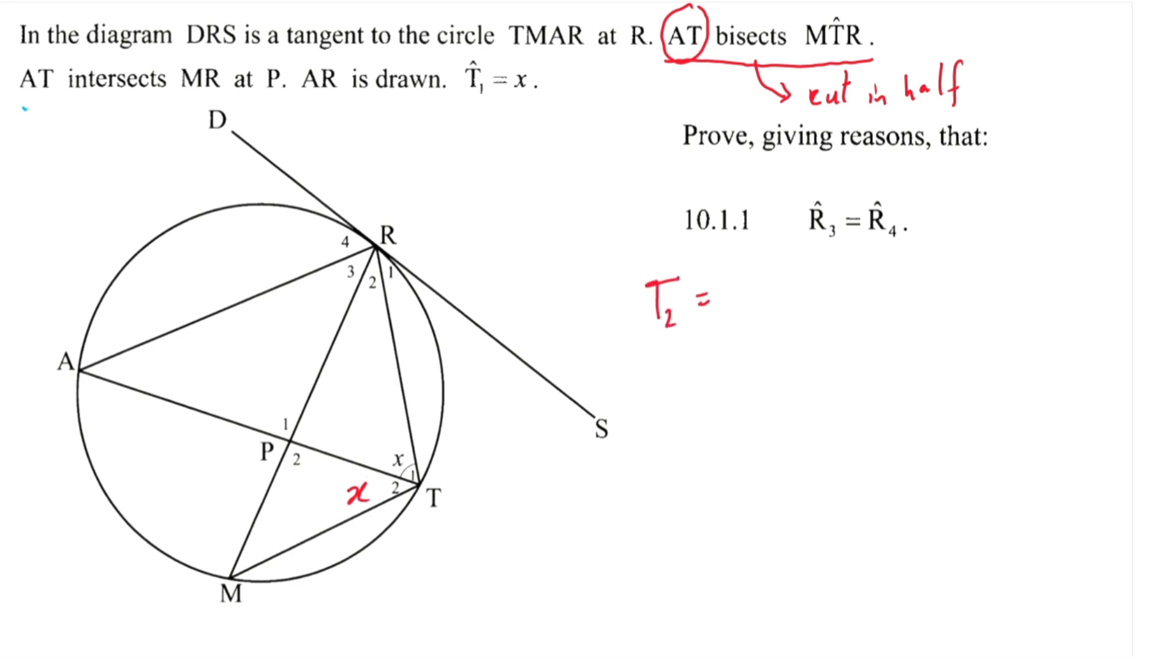T2 is equal to x, and your reason is AT bisects MTR. Now we are also given that DRS is